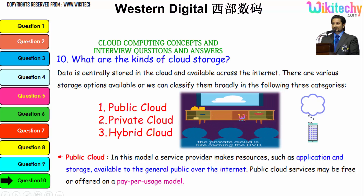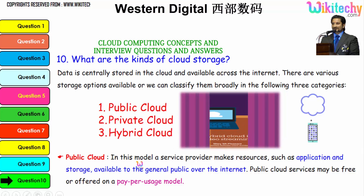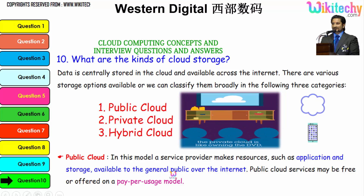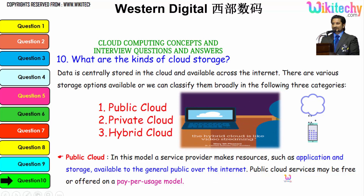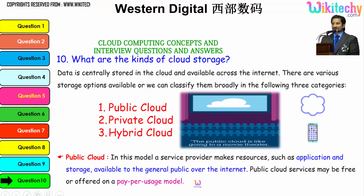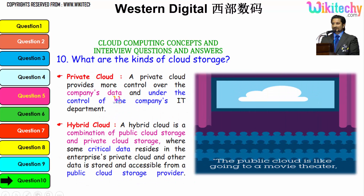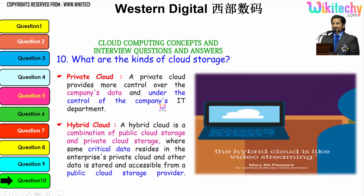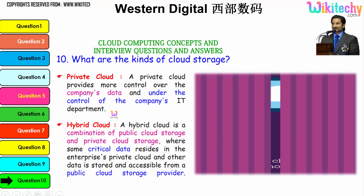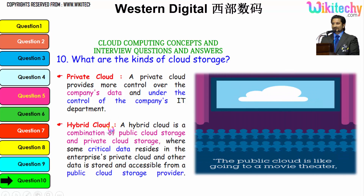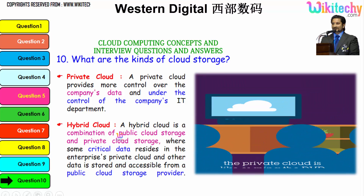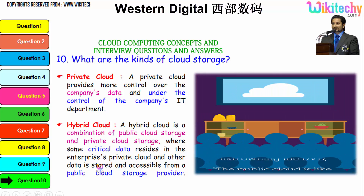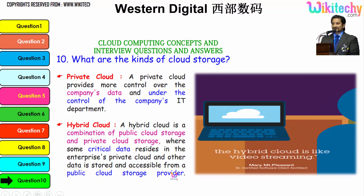In the public cloud model, a service provider makes resources such as applications and storage available to the general public over the internet. Public cloud services may be free or offered on a pay-per-usage model. A private cloud provides more control over the company's data and is under the control of the company's IT department. A hybrid cloud is a combination of public and private cloud storage, where critical data resides in the enterprise private cloud and other data is stored in a public cloud provider.